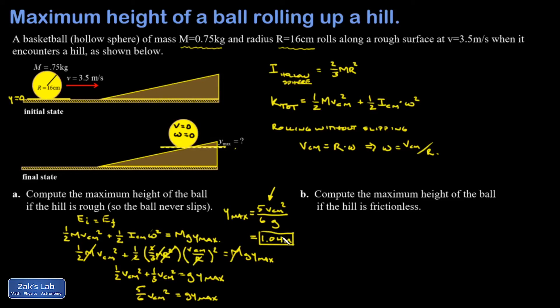Part B is interesting. We're going to say that suddenly when we hit the hill the surface becomes frictionless, like perfect ice on this hill. What this does is it makes it so there's no way for the rotation rate to slow down.